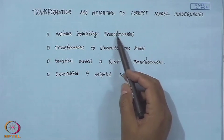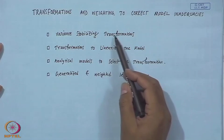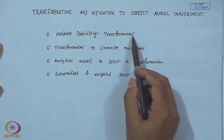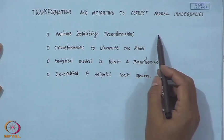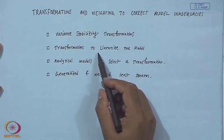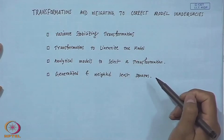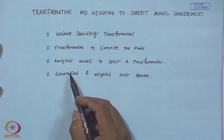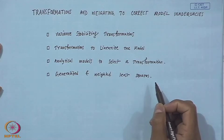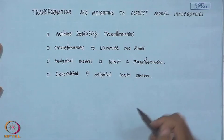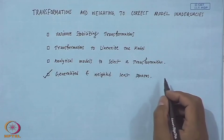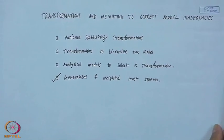We take some transformation on the response variable to correct the non-constant variance assumption, and also we talked about transformations to linearize the model. We are left with analytical methods to select a transformation and generalized and weighted least square. Today we will be talking about the generalized and weighted least square technique.